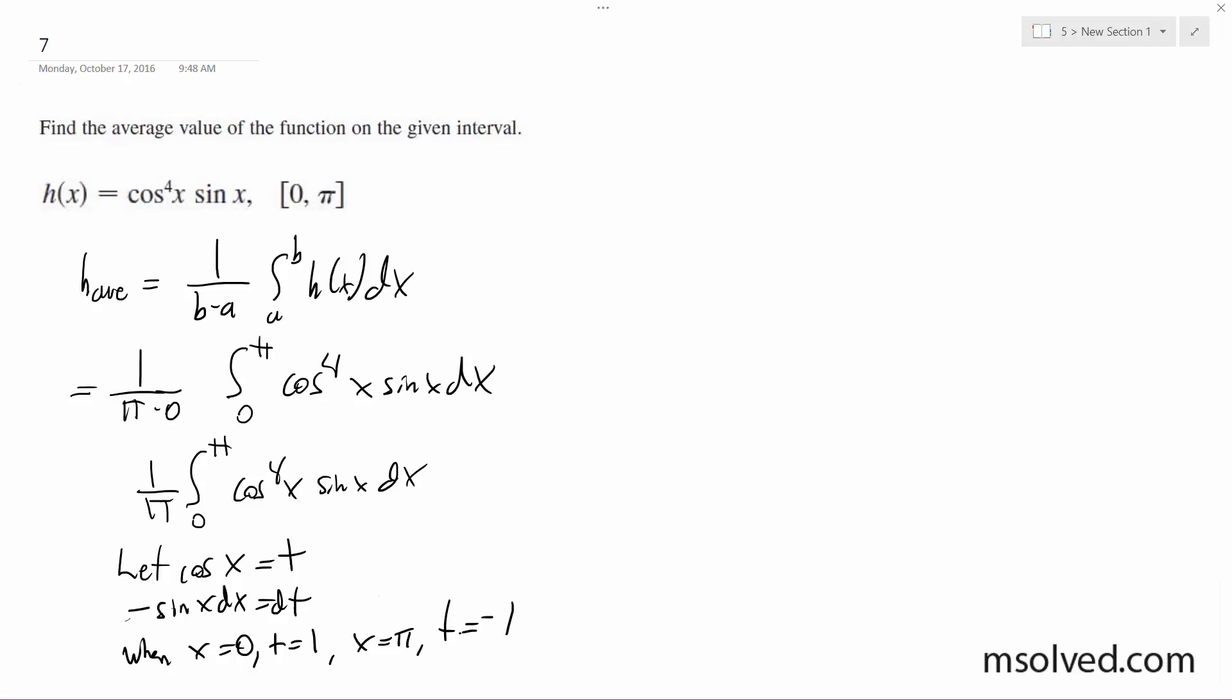All right, now we're ready to solve. So, average function value is going to be 1 over π, negative 1 to 1.